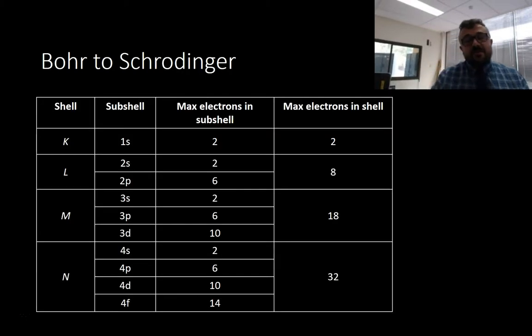Bohr to Schrodinger, how do they relate? These are the Bohr shells, K, L, M, N. Then we've got the subshells and what exists in it. You've still got two electrons in your K shell because it's only made up of 1S. Your L shell has 8 electrons because it's got the 2S and the 2P. M has 18 because it's got the 3S, 3P, 3D, and so forth.